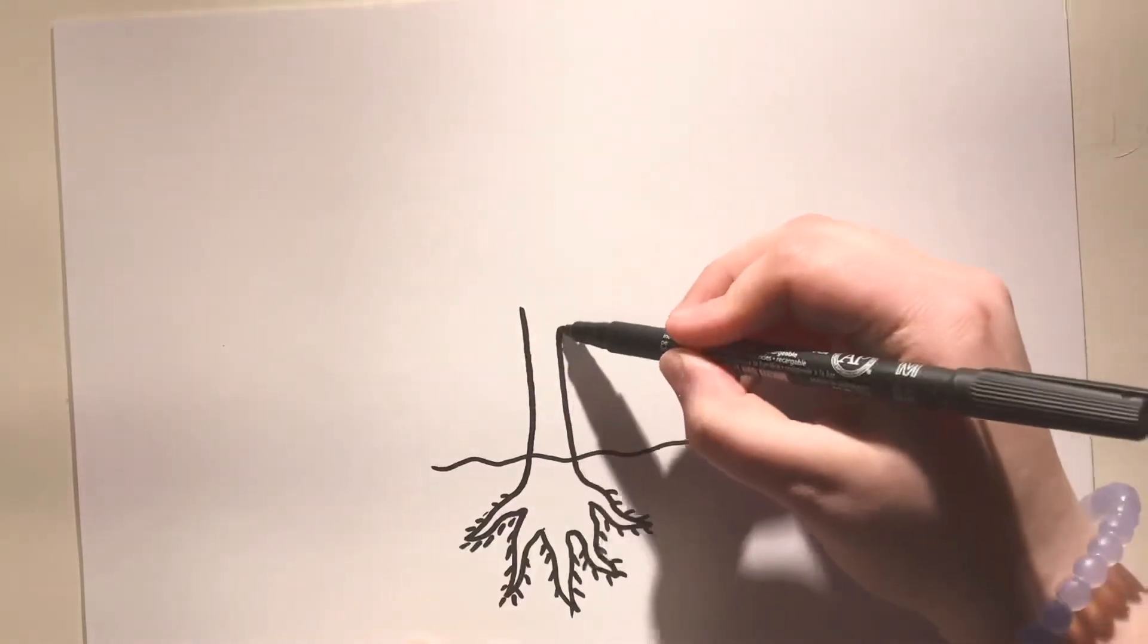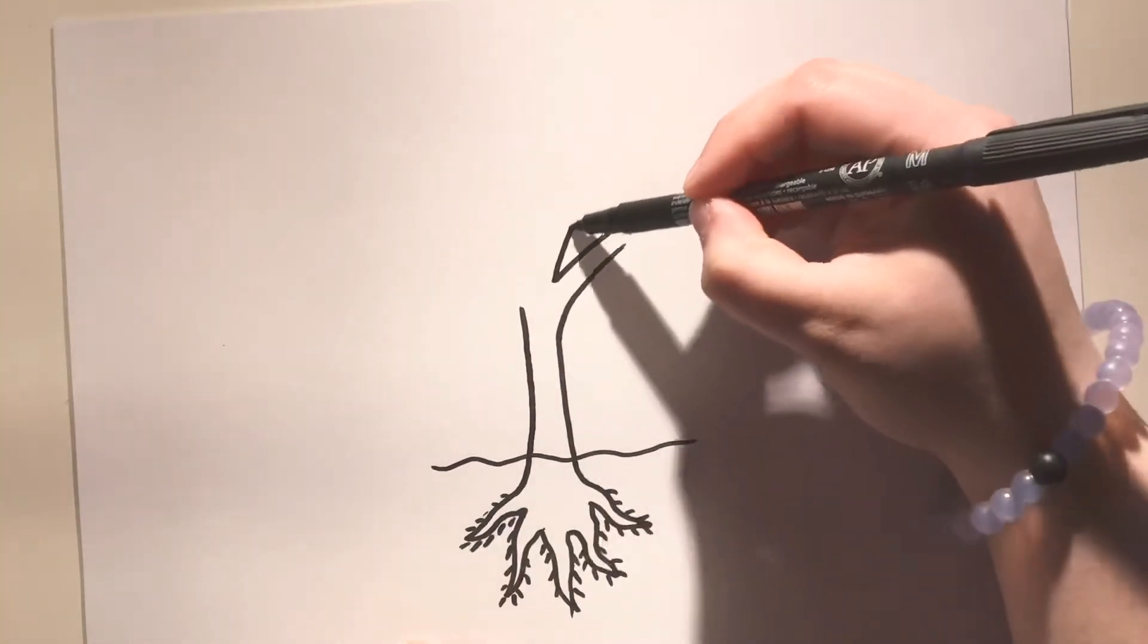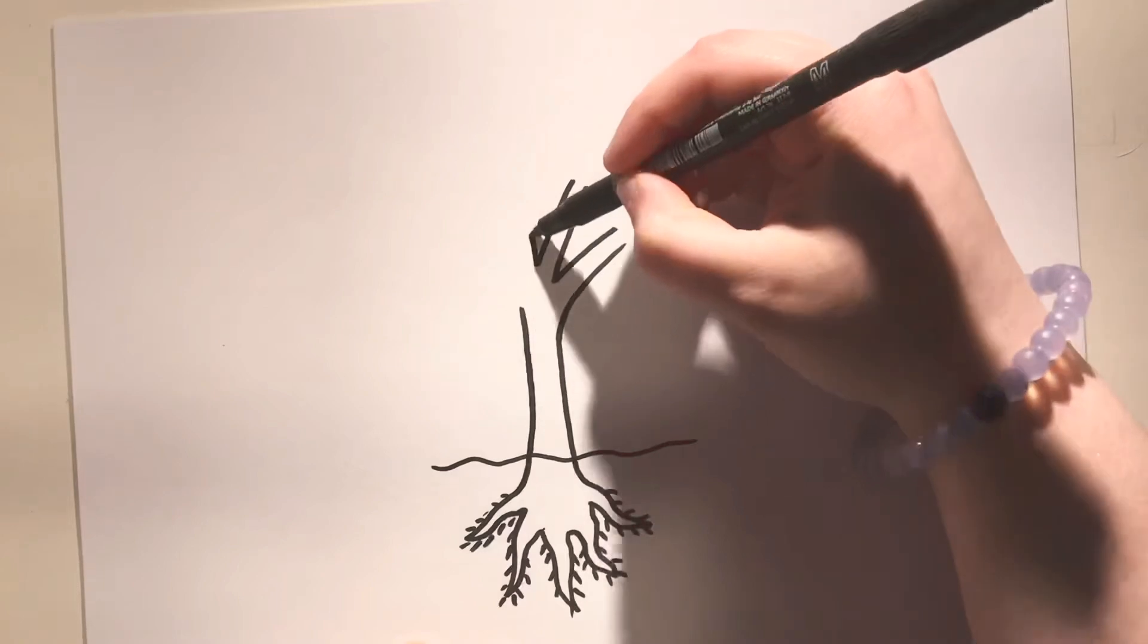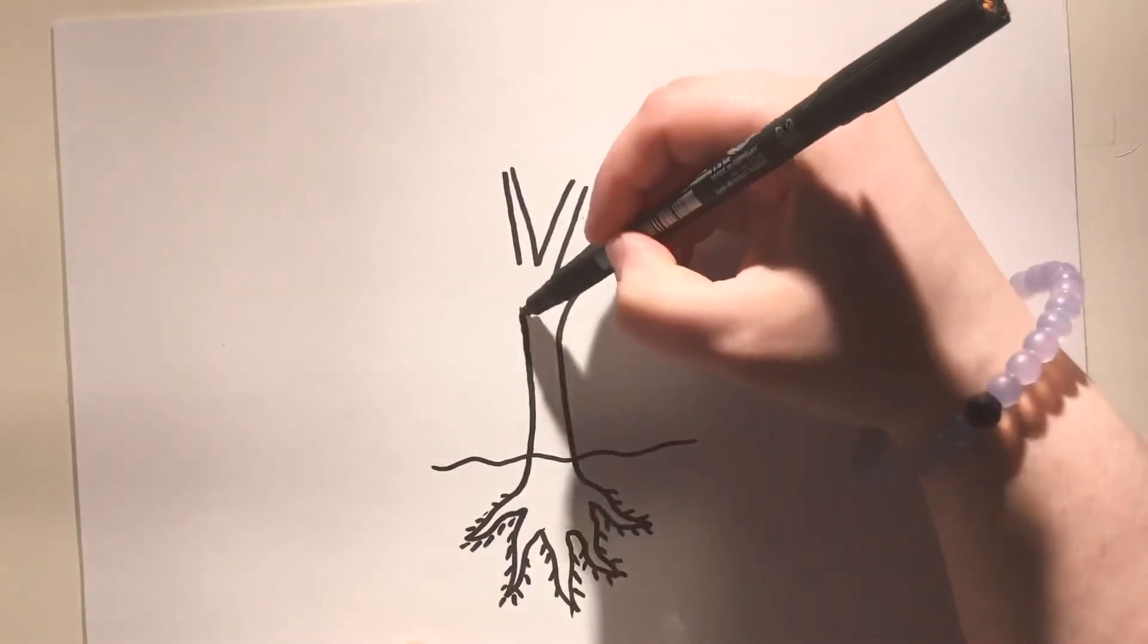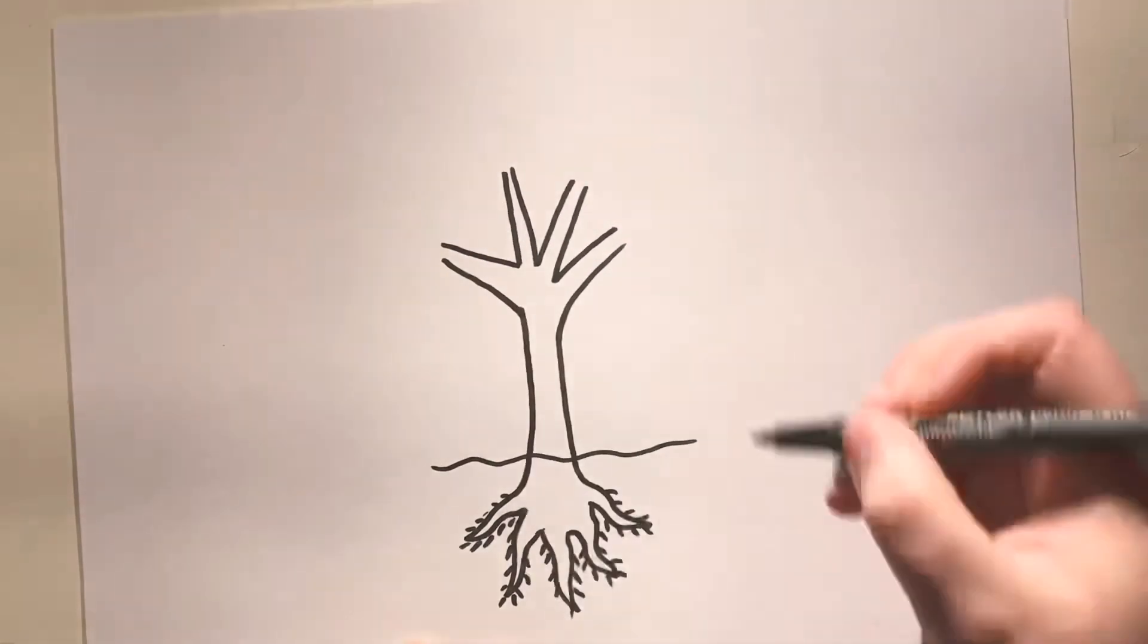The trunk is the next part of the tree. The trunk takes the nutrients and water that the roots find from the ground and brings it upwards for the branches and the leaves.